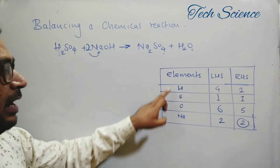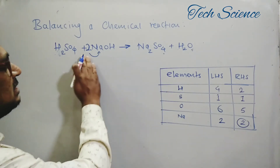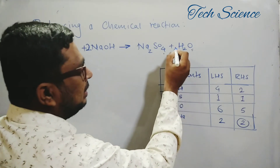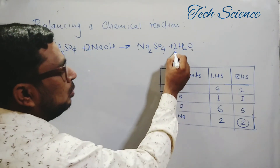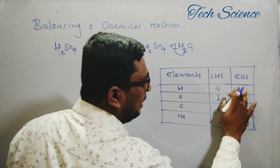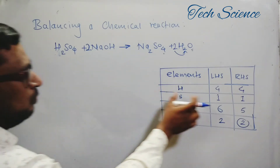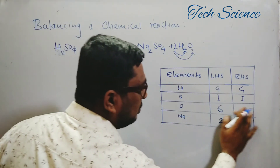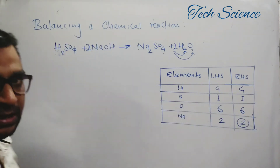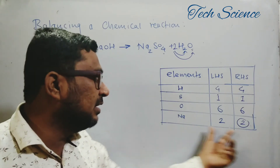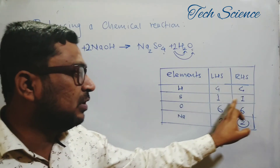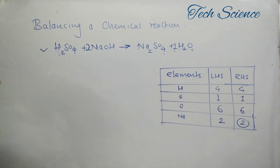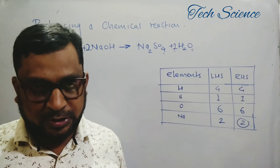Sodium is now balanced and sulfur is clear. But there is still a change in hydrogen and oxygen. To balance hydrogen and oxygen, we place a coefficient of 2 in front of H₂O. This gives four hydrogens on the right-hand side, matching four on the left. The two coefficient also gives two oxygen from water, plus four from Na₂SO₄ — making six oxygens on the right. Now checking: hydrogen four equals four, sulfur one equals one, oxygen six equals six, sodium two equals two. This is now a balanced chemical reaction.